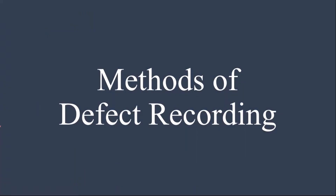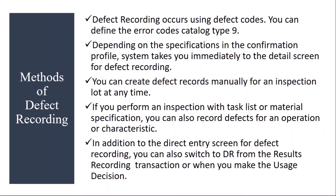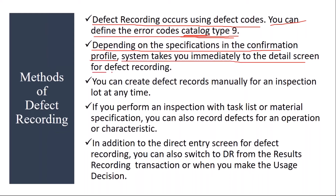Now let's understand the methods of defect recording. Normally defect recording occurs using defect codes. You can define the error codes using catalog type 9 — I will show you this in the system. We discussed catalogs, codes, and code groups during our master data classes, but I will show you again today with catalog type 9. Depending on the specifications in the confirmation profile, the system takes you immediately to the detail screen for defect recording. Based on certain settings you make in the system, it will take you immediately to the defect recording screen. You can create defect records manually for an inspection lot at any time — that option is also available.